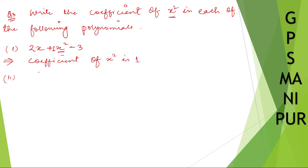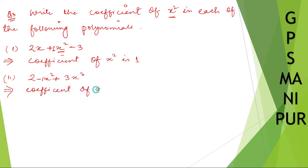Roman number two: 2 minus x square plus 3x cube. Here, the coefficient of x square — if you see here it is minus one. So the coefficient of x square is minus one.